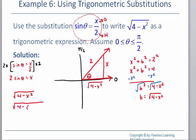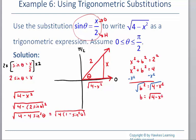So I have the square root of 4 minus, and I substitute 2 sine theta for x, then square it. That gives the square root of 4 minus 4 sine squared theta — we square both the 2 and the sine theta. Both terms have a factor of 4 in common, so I pull out the 4: that gives the square root of 4 times 1 minus sine squared. The square root of 4 is 2, so that comes out to the front, leaving 2 times the square root of 1 minus sine squared.